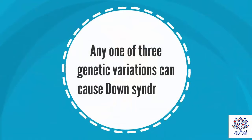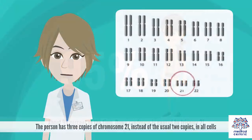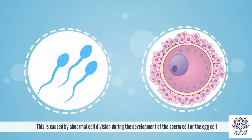Trisomy 21: About 95% of the time, Down syndrome is caused by trisomy 21. The person has three copies of chromosome 21 instead of the usual two copies in all cells. This is caused by abnormal cell division during the development of the sperm cell or the egg cell.